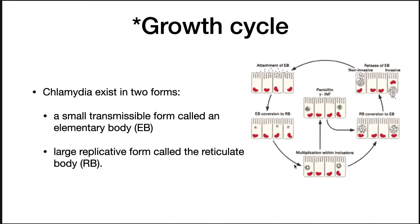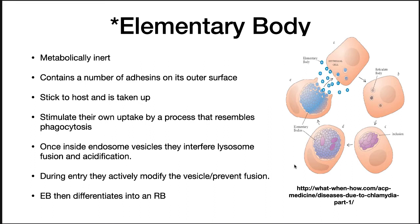Now we're going to spend some time talking about the growth cycle. Chlamydia basically exists in two forms: a small transmissible form called an elementary body (EB), and a large replicative form called the reticulate body. The elementary body is metabolically inert and is the form that transmits from one host to another. It contains adhesins on its outer surface that stick to a host cell, and it is then taken up. They even stimulate their own uptake by a process resembling phagocytosis. Once inside an endosome vesicle, they interfere with lysosome fusion and acidification, creating a chamber within which they can grow. During entry they actively modify the vesicle to prevent fusion.